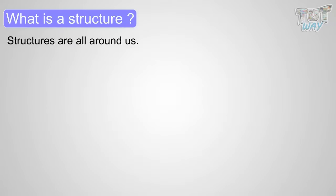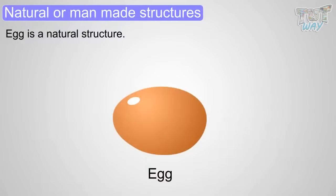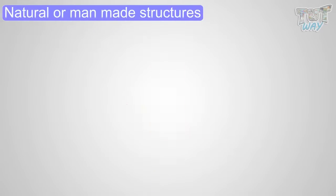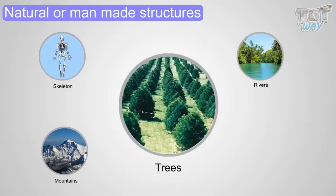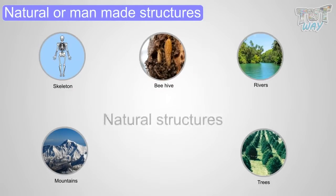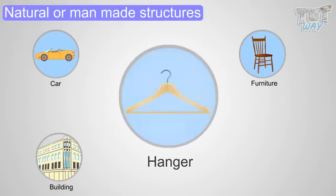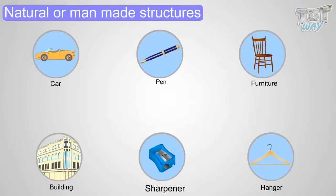Structures can be natural or man-made. Egg is a natural structure. Our body is a natural structure. Skeleton, mountains, rivers, trees, beehive are all natural structures. Cars, buildings, furniture, hangers, pens, sharpeners are man-made structures.